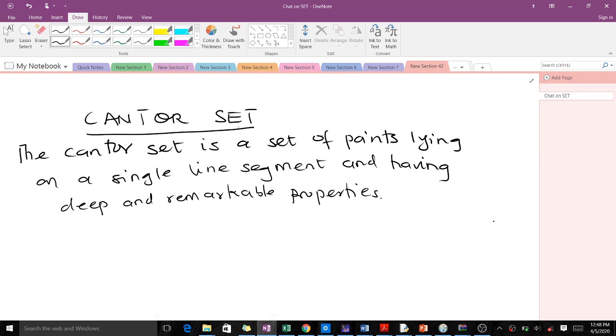It's an example of a disconnected space, in fact a totally disconnected space. The Cantor set is a set of points lying on a single line segment and having deep and remarkable properties. We will learn how to generate the formula for the Cantor set.